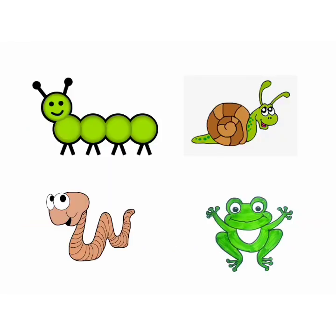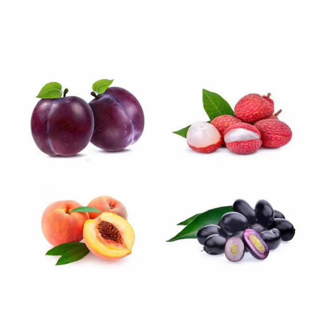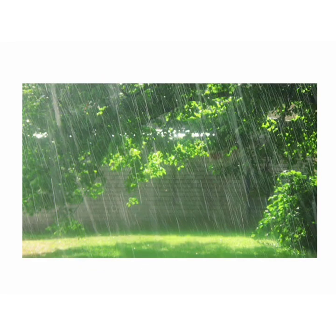Caterpillar, snails, earthworms, and frogs are the monsoon creatures. We get fruits like plum, lychee, jamun, and peach during monsoon. Monsoon brings greenery in the nature.